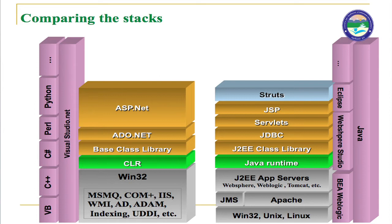In .NET Framework we use ADO.NET, while in Java Framework we use JDBC. Both serve the same purpose but are written by different vendors. For the base class library, .NET has its own base class library while Java technology has J2EE class library. CLR is present in .NET technology while Java has the Java Runtime. This is the basic difference between these two technologies.